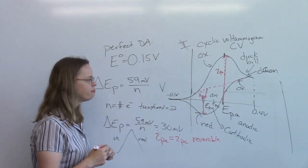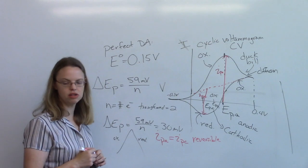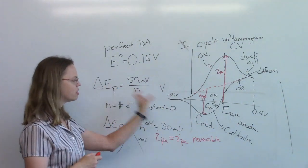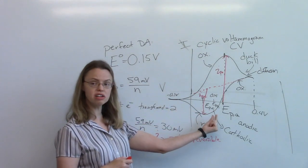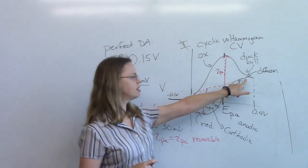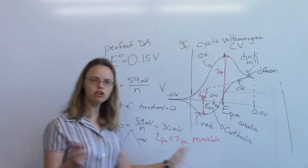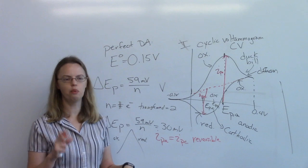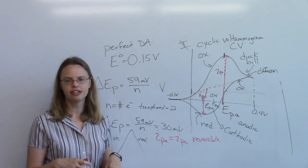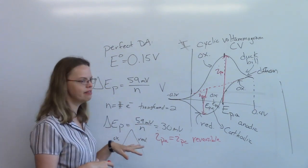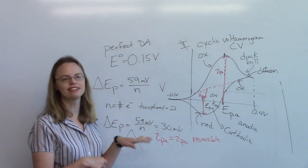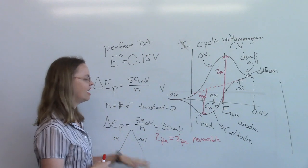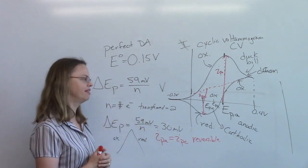So that's the basics of what slow scan CV looks like: Ipa should equal Ipc, the peaks should be really close together — about 30 millivolts apart — and you should see this classic duck bill shape. If you don't understand that, then you won't understand how weird our results are when we get to fast scan CV. That's why I can't ever teach FSCV without first teaching conventional CV — you have to understand the background in order to get there.